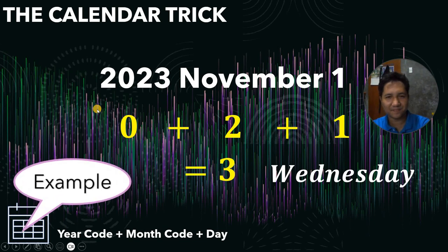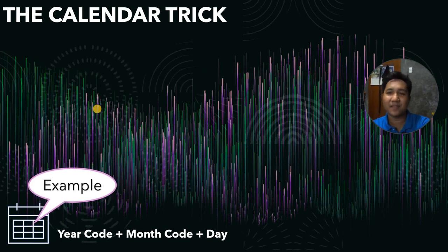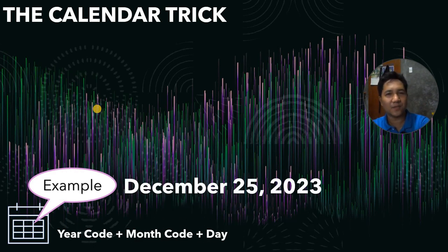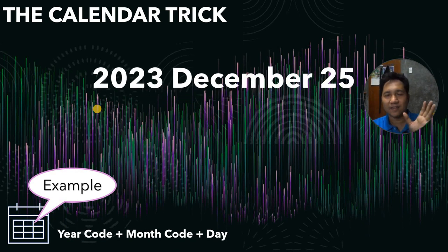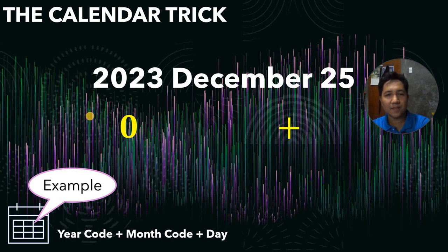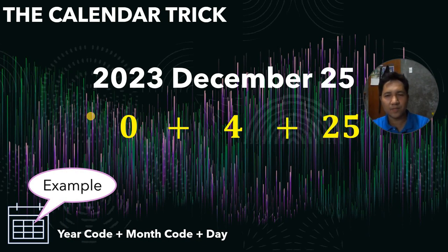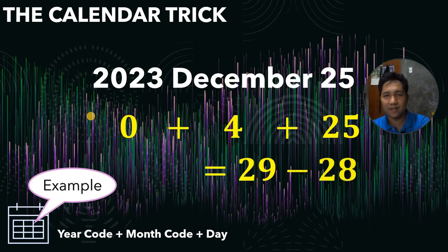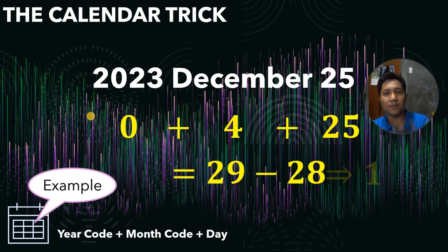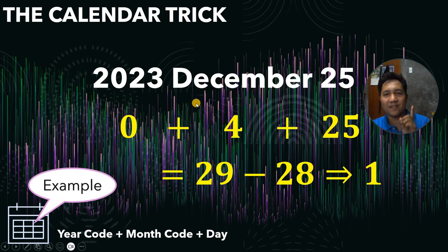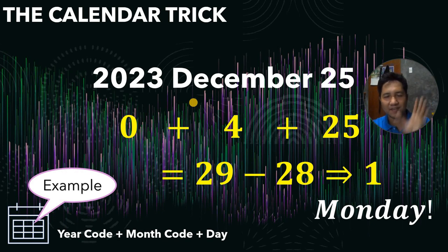Another example — the last one, then I will teach you how to do this trick. We have December 25, 2023 — Christmas day. The year code for 2023 is 0. The month code for December is 4. We add 25. So we get 29, then subtract the largest multiple of 7 which is 28. Now 29 minus 28 gives us 1, so December 25, 2023 falls on Monday. Therefore, Christmas day in 2023 is on Monday.